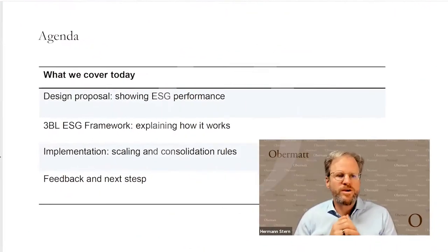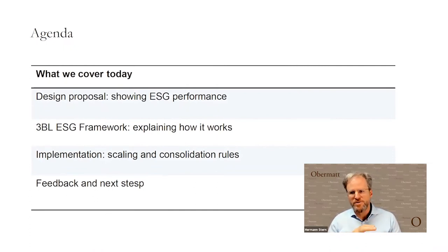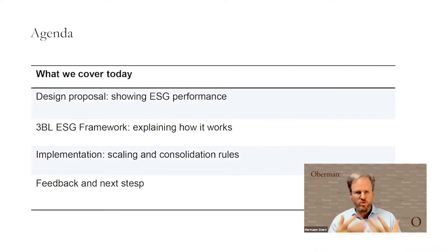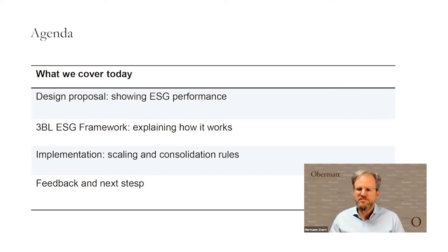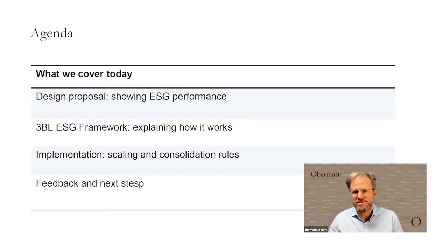What we will do today is first show what we have developed. The objective of today's meeting is to show our ESG reporting method — the solution we call Triple Bottom Line — and receive your first feedback. We'll show how you can illustrate ESG performance, take you through the entire framework, present an example of the metrics we have found, and explain the method. We'll also show how you can scale and consolidate ESG performance.